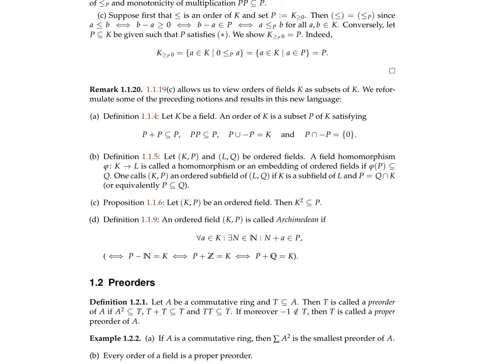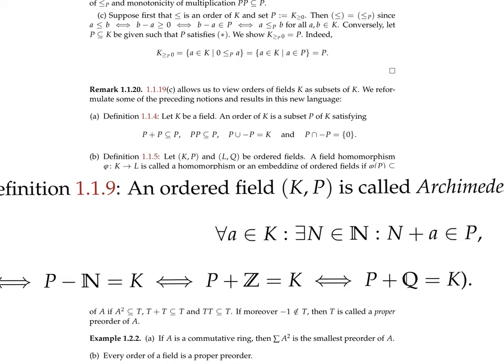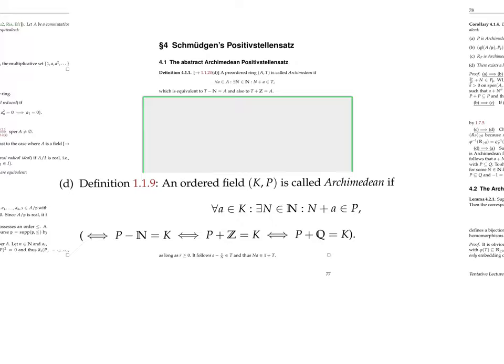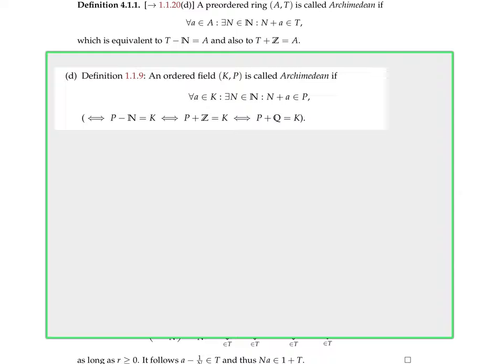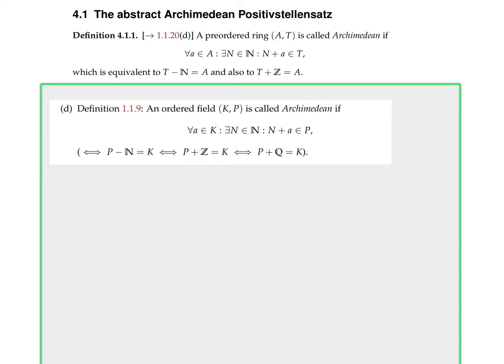It was a reformulation of a definition, because ordered fields were at the beginning of the lecture defined with the order being a binary relation; later we saw it could be seen as a subset. If you see it as a subset, then the Archimedean condition was this definition — you see it's exactly the same thing.